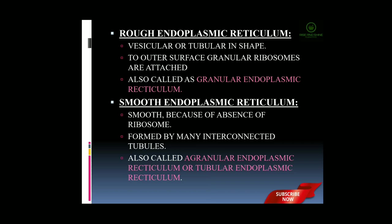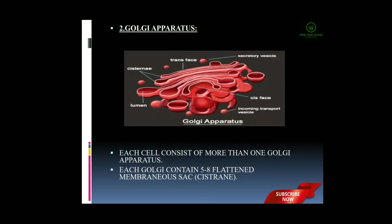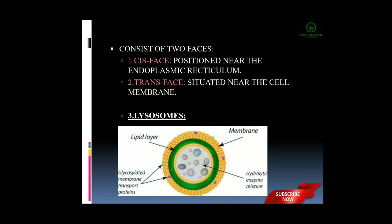Next is the Golgi apparatus. The Golgi apparatus is also called the Golgi body or Golgi complex, which is present in all types of cells except RBCs. Each cell consists of more than one Golgi apparatus. Each Golgi apparatus consists of 5 to 8 flattened membrane sacs known as cisternae. This Golgi apparatus consists of 2 phases: one is the cis phase, present near the endoplasmic reticulum, and another is the trans phase, situated near the cell membrane.